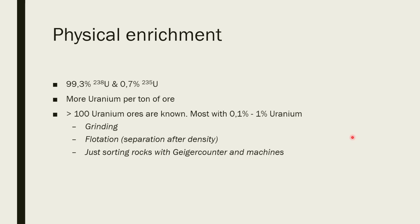There are more than 100 known uranium ores. Most of them contain about 0.1 to 1% of uranium by weight. What you first have to do is what's called physical enrichment. So you want to have as much uranium and as little rock as possible, because uranium ore is mostly just rock.